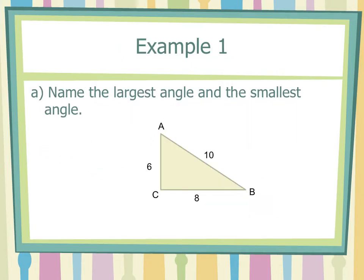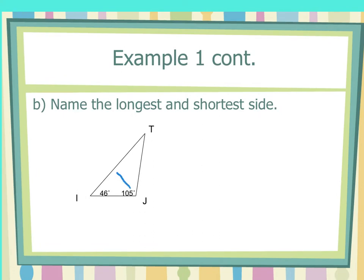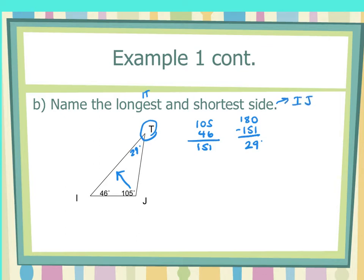Name the largest angle and the smallest angle. Largest is angle C. Smallest is angle B. Name the longest and shortest side. First, find the missing angle — 105 plus 46 is 151, and 180 minus 151 is 29. Now, longest side is IT, because 105 is the largest angle and IT is opposite it. Shortest side is JI, opposite angle T which is 29 degrees, the smallest angle.